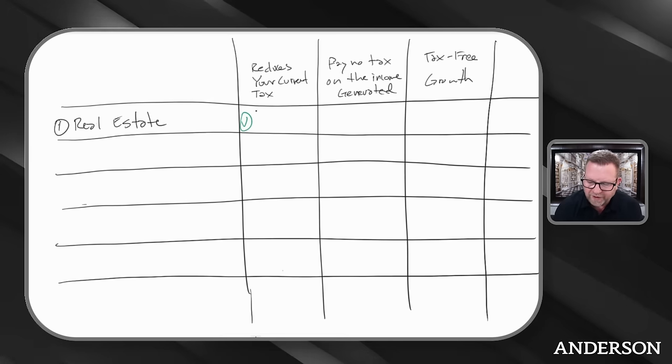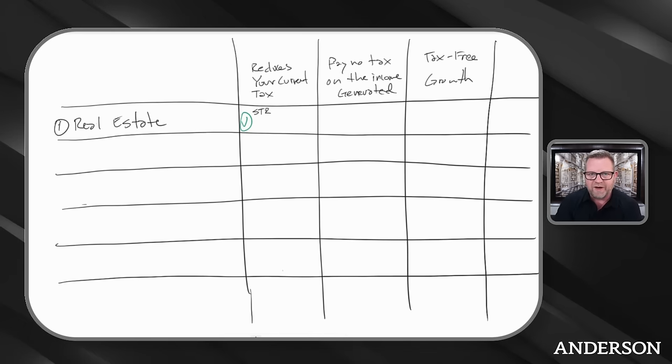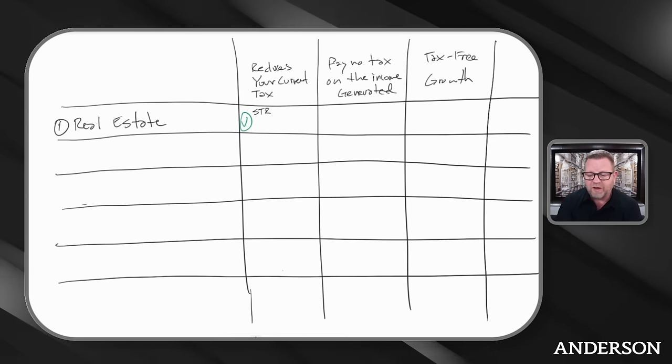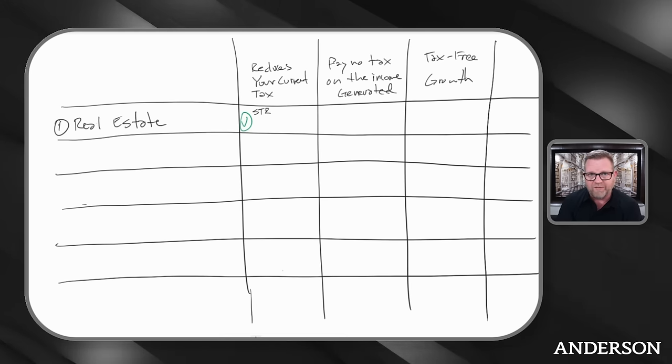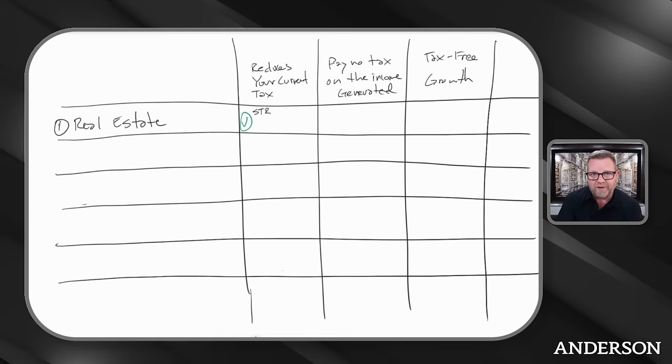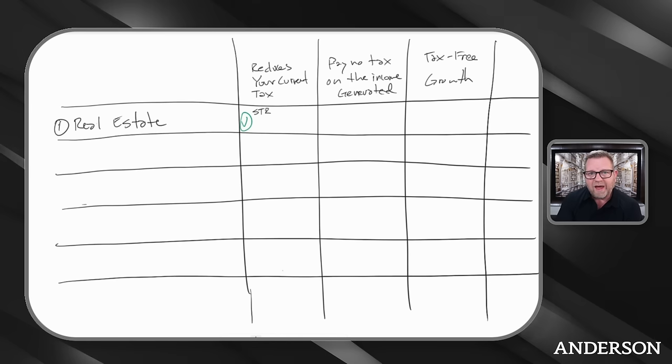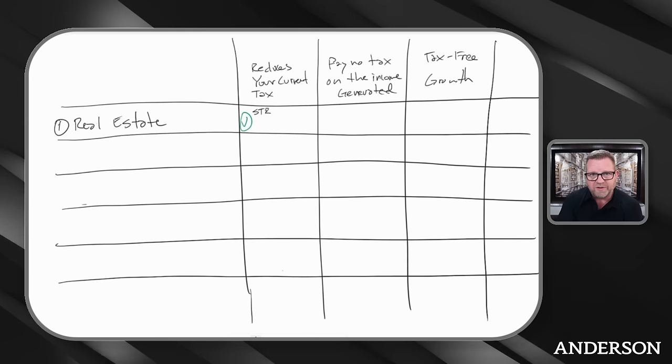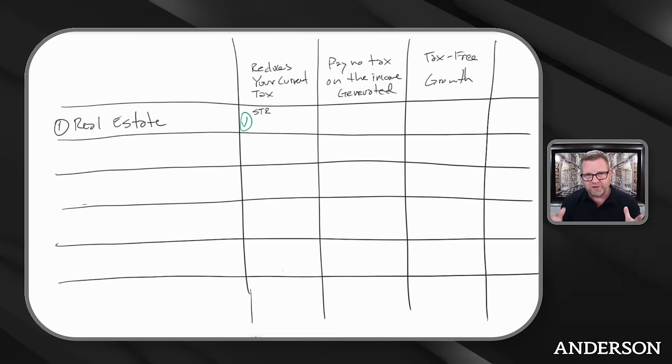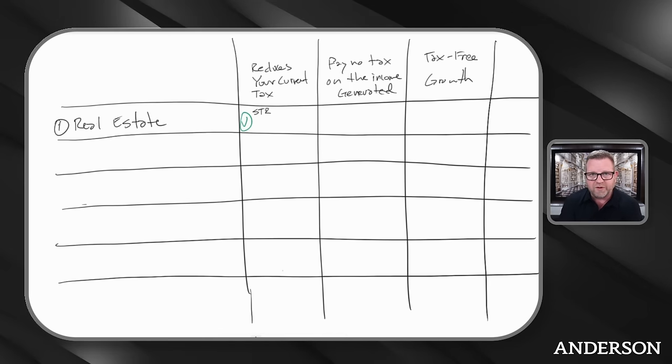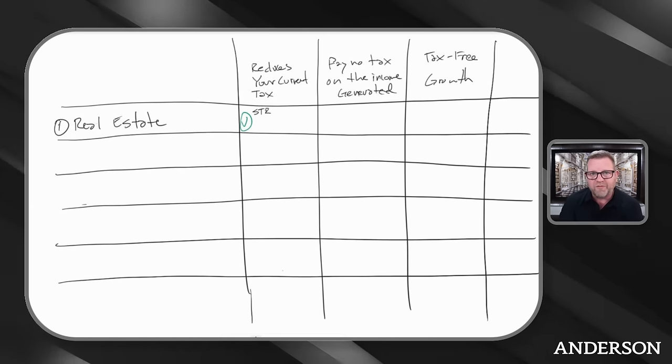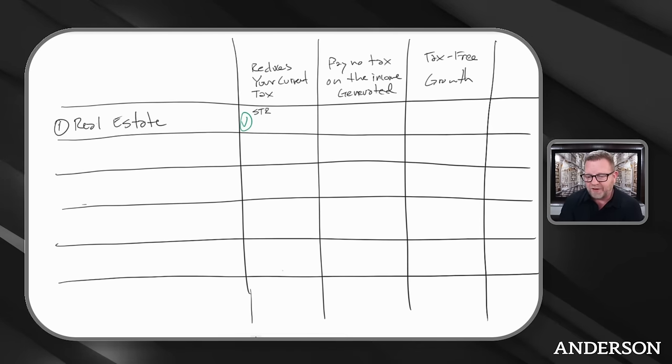Number one, you could be investing in short-term rentals. If it's seven days or less average use, the losses on that aren't considered passive. There's a step you have to take called material participation. The depreciation off of that property gets written off as a deduction over its useful life, and you can accelerate that.